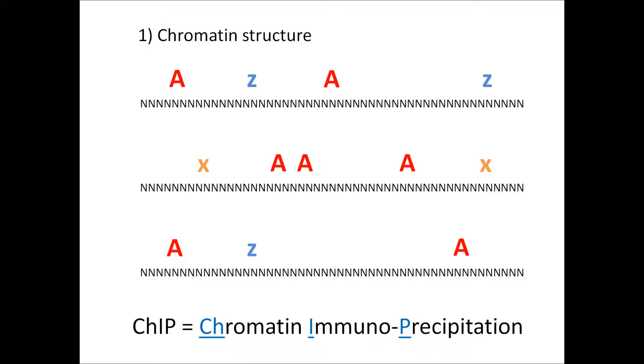Chromatin immunoprecipitation is a method to detect where a protein or modification is found on the genome. It's typically used to identify where transcription factors bind, where histone modifications are located, but there are also techniques to identify where methylation occurs on the genome. As long as you can create an antibody to detect a particular protein epitope or modification, then you can use ChIP-seq to identify the individual sites. The aim of the ChIP protocol is to generate DNA enriched for where the protein of interest or modification binds in the genome.